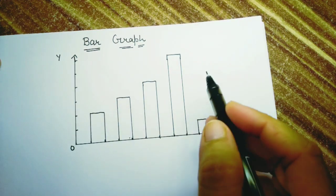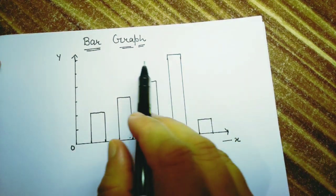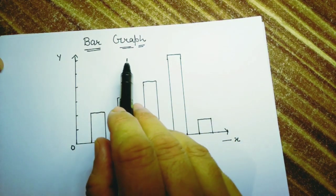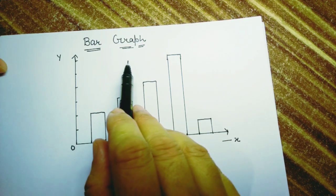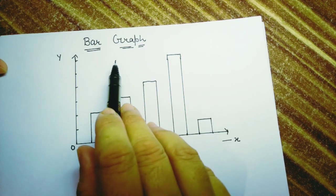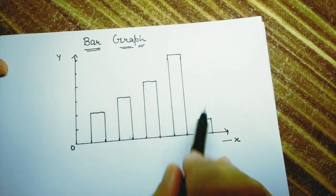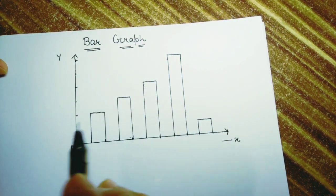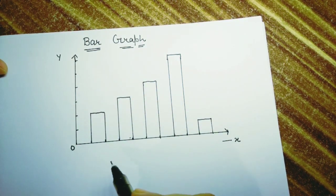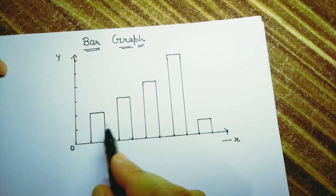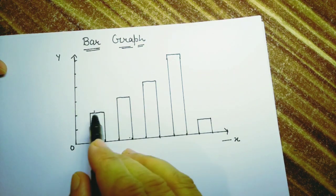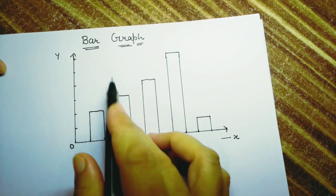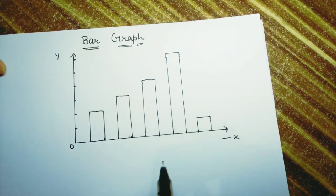Good morning friends. Today we are going to discuss about the bar graph. A bar graph is a pictorial representation of numerical data in the form of rectangles, and these rectangles have the same width but different height.